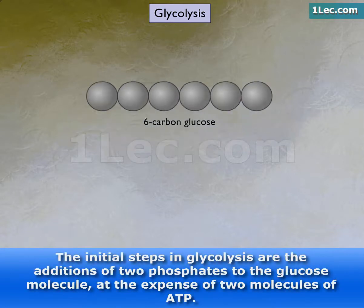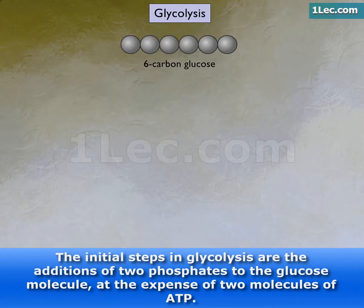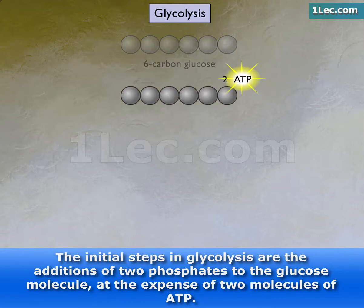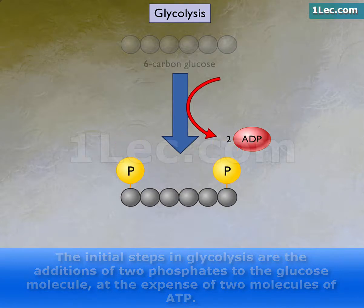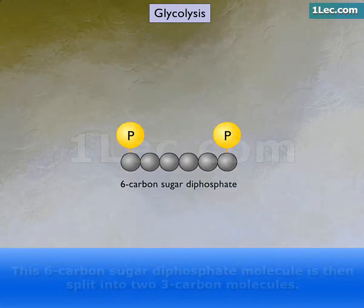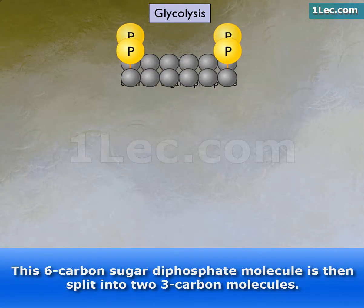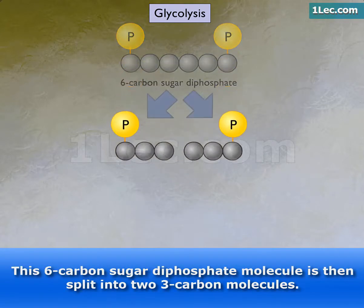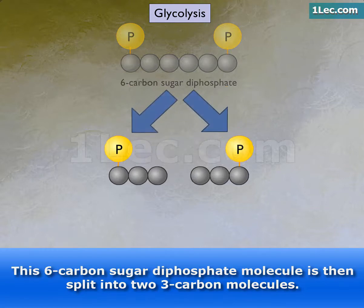The initial steps in glycolysis are the additions of two phosphates to the glucose molecule at the expense of two molecules of ATP. The result is a 6-carbon sugar diphosphate molecule and two low-energy adenosine diphosphate molecules, or ADP. This 6-carbon sugar diphosphate molecule is then split into two 3-carbon molecules.